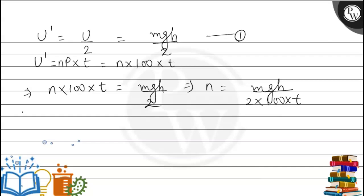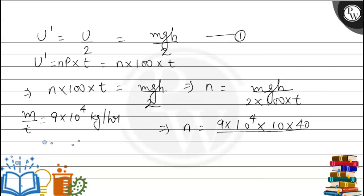The rate at which water flows from the tank, m/t, is given as 9×10^4 kg per hour. The value of n becomes 9×10^4 times g which is 10, times the height of the tank which is 40, divided by 2×100. This is 9×10^4 kg per hour.